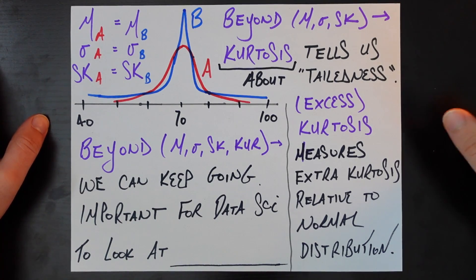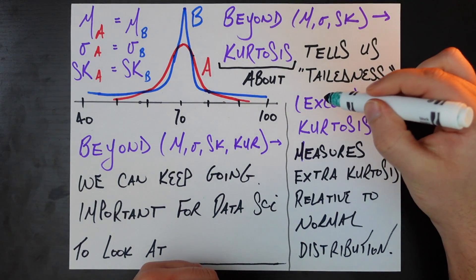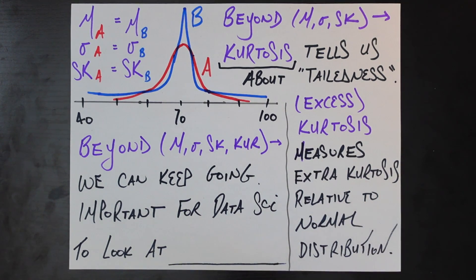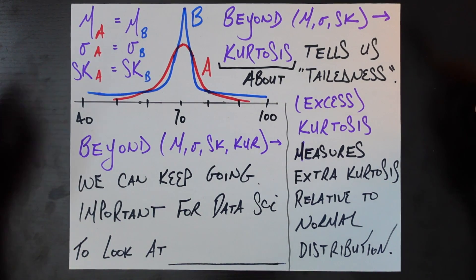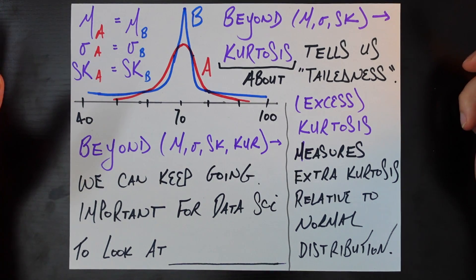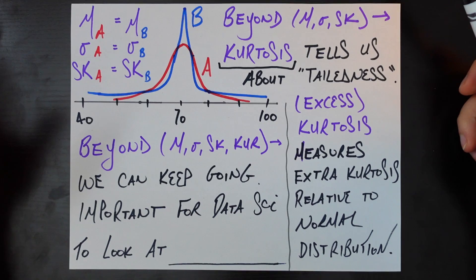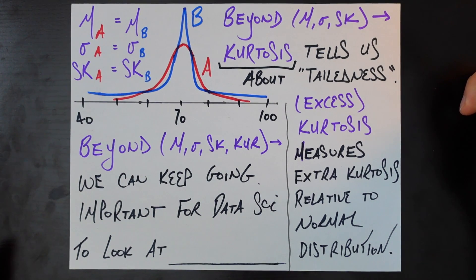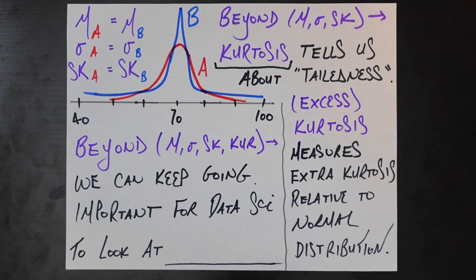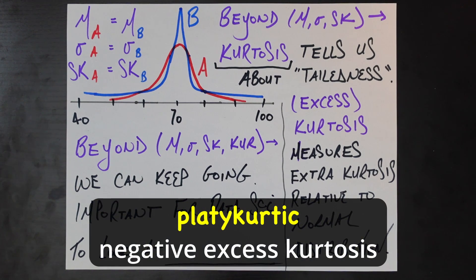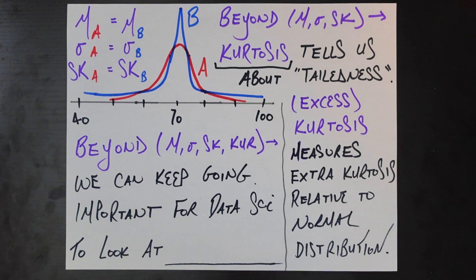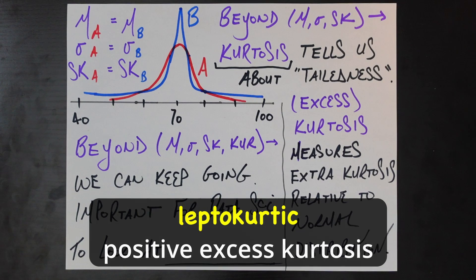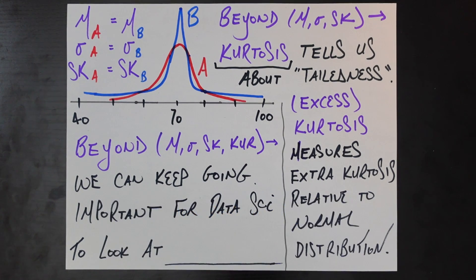Typically when you talk about kurtosis in data science or stats, you're talking about a notion called excess kurtosis, which measures the additional kurtosis relative to a normal distribution. The convention in data science is that normal distributions like A here have a kurtosis of zero, and anything with more kurtosis than the normal distribution is said to have positive excess kurtosis — so this B distribution would have positive excess kurtosis. Anything with tails approaching zero even faster than the normal distribution would have negative excess kurtosis. Distributions with negative kurtosis are said to be platycurtic, and distributions with positive excess kurtosis like our B distribution are called leptocurtic — cool words to know.